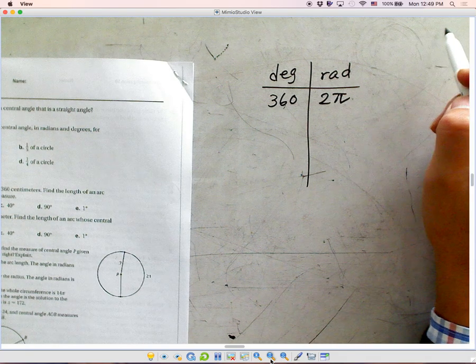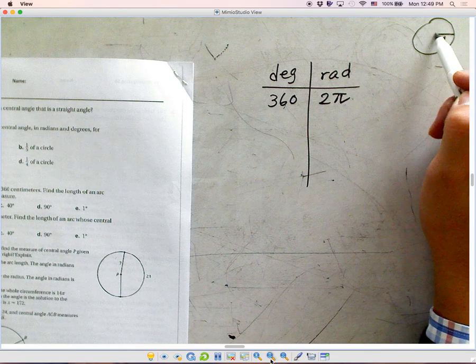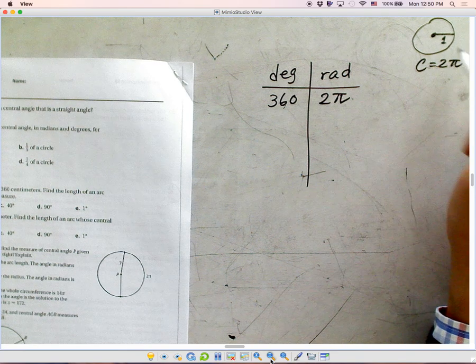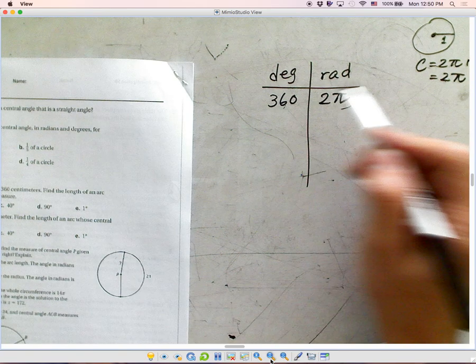Because if you think about the circle with radius 1, what is the circumference? Circumference equals 2 times pi times r. If r is 1, then we have 2π. That's where this 2π come from.